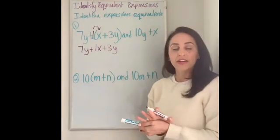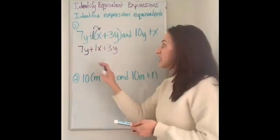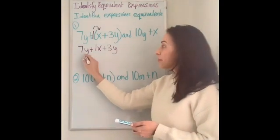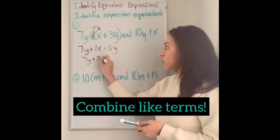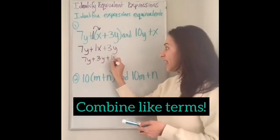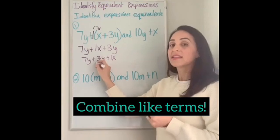So I stopped here and now I'm going to look at all the terms and see if I can combine like terms. 7y and 3y are alike. So I'm going to combine them. I'm going to write 7y plus 3y plus one x.